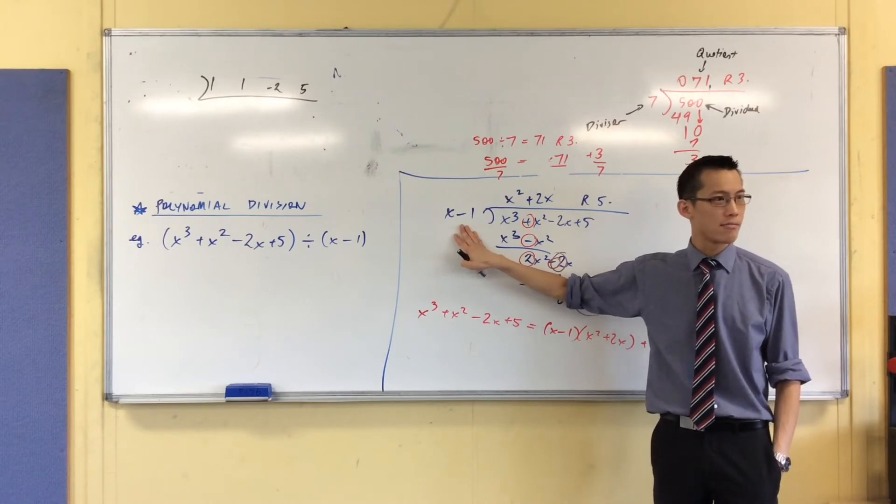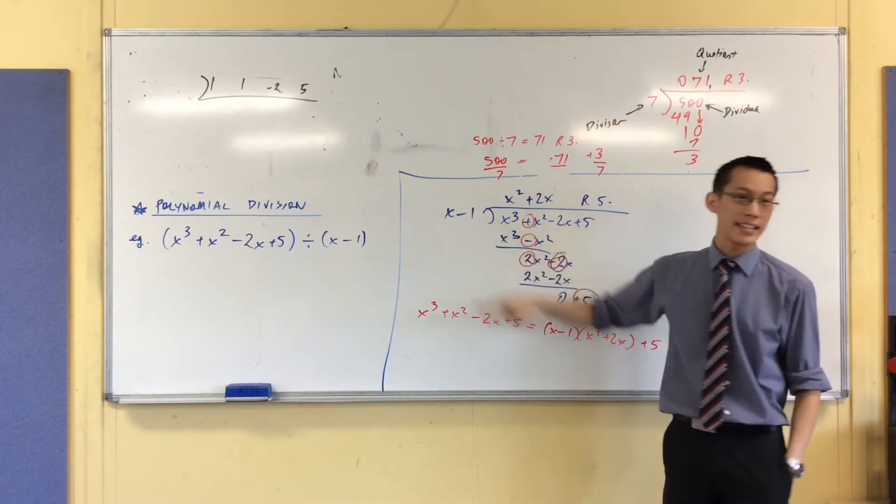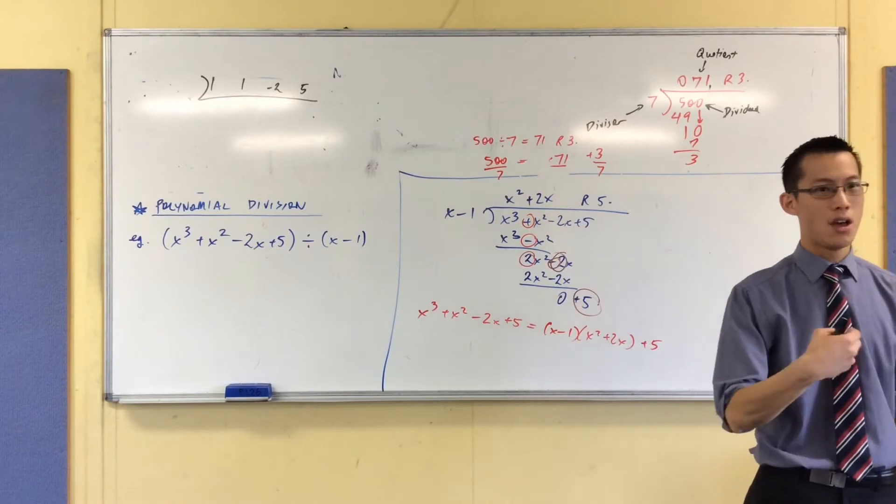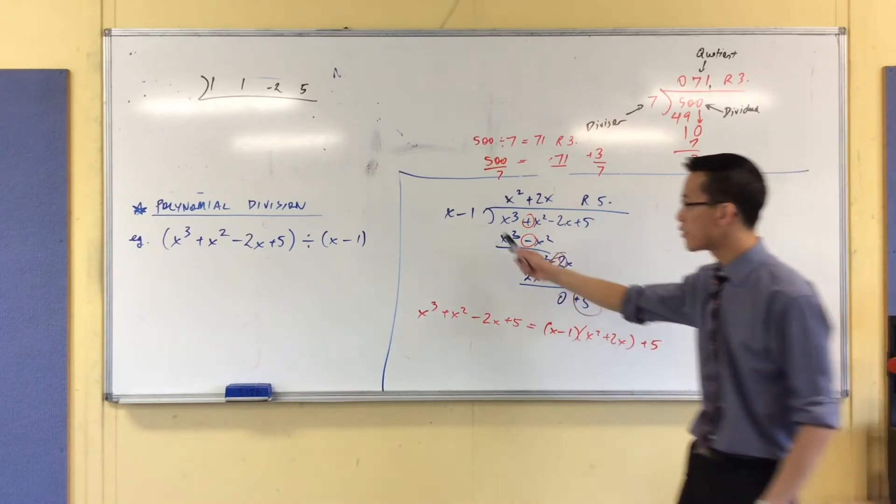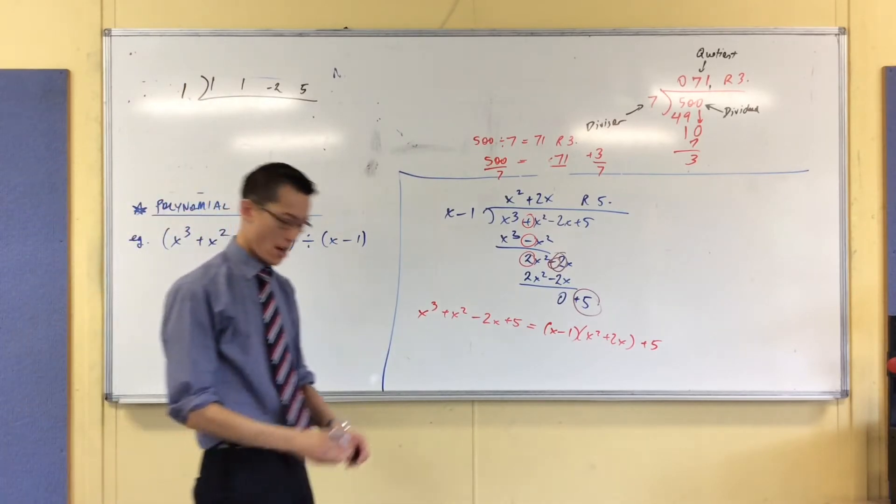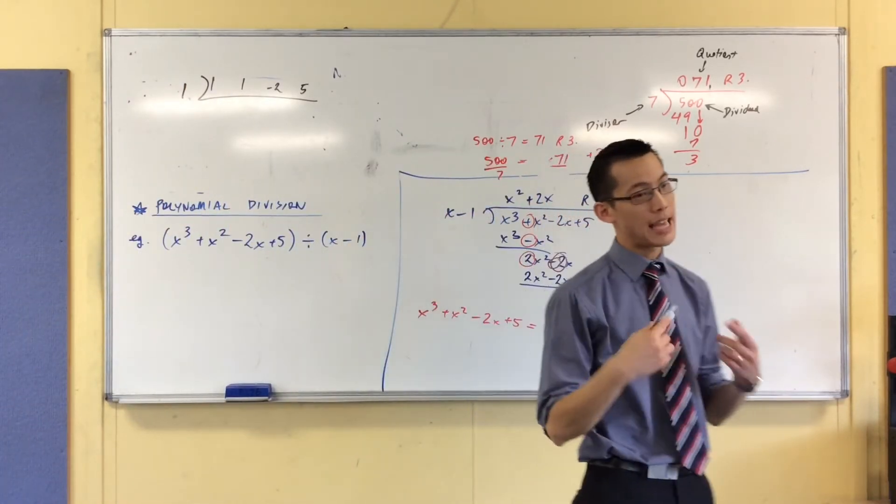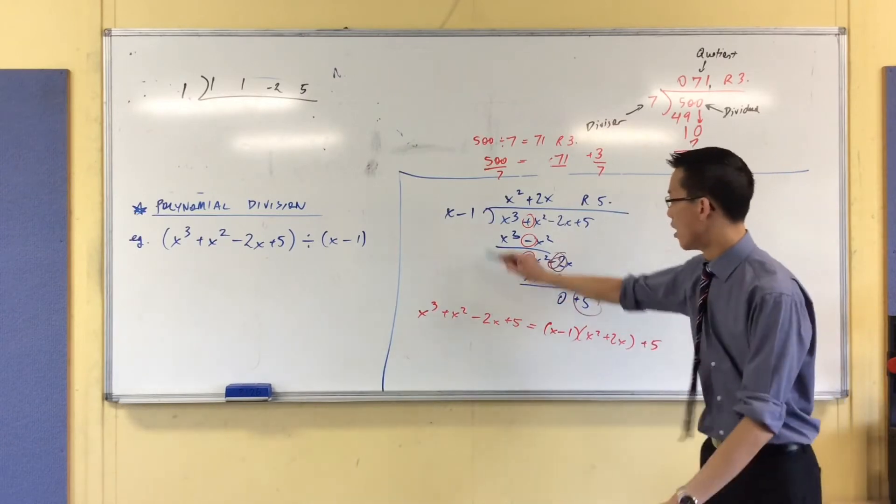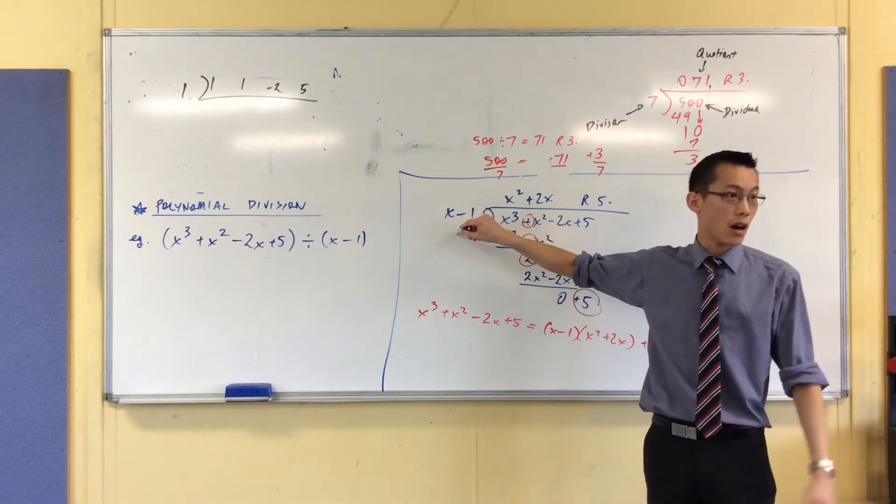So if this number were opposite in sign, then I wouldn't subtract it. I would add it, right? Instead of subtracting negative 1, I would just add 1, right? So instead of getting negative 1 over here, I'm just going to write the opposite of that.